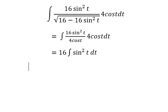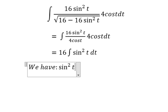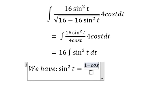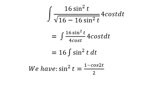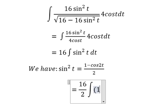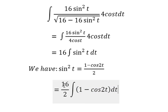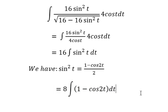We have the formula: sine squared t equals 1 minus cosine 2t divided by 2. So we will replace sine squared t into 1 minus cosine 2t over 2, and we have the answer.